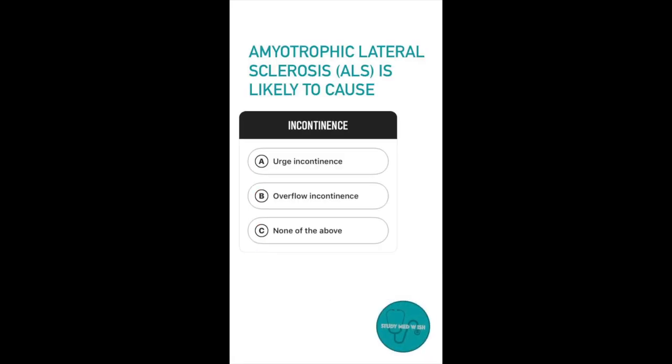Question number nine: ALS is likely to cause option A, urge incontinence, option B, overflow incontinence, option C, none of the above. The answer to this question is none of the above. Although ALS does affect the upper and lower motor neurons, what's unique about it is that it does not cause bowel or bladder dysfunction.